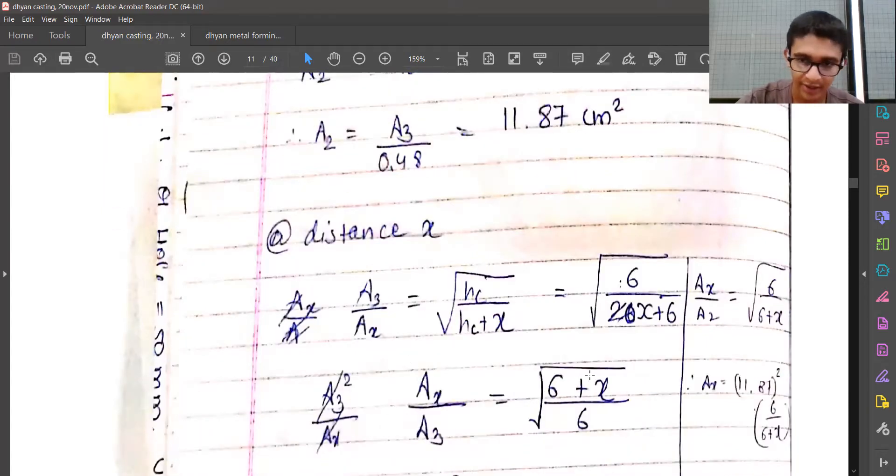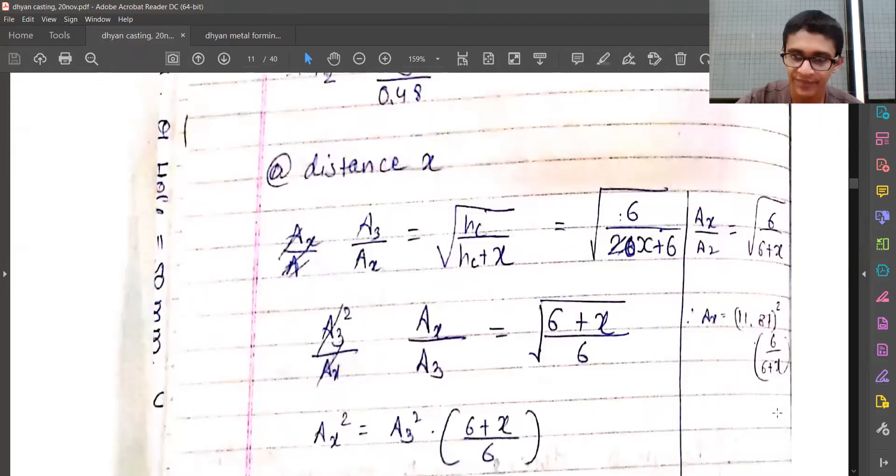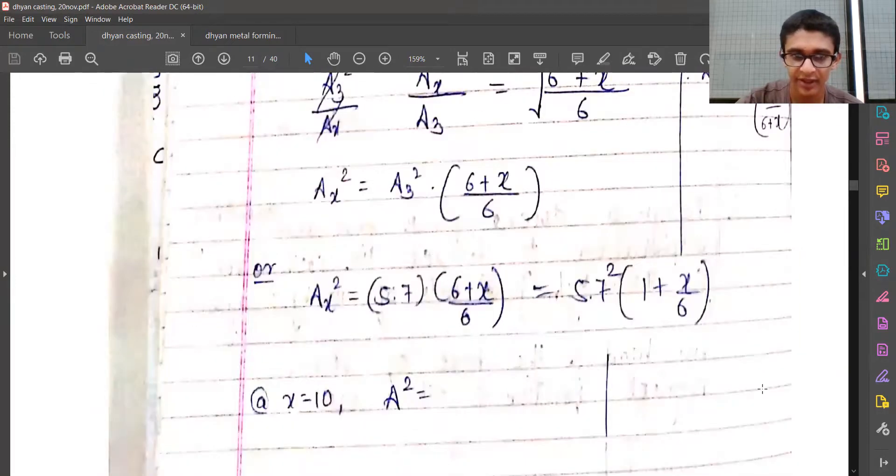So ax by a2 will be equal to square root of 6 upon 6 plus x. And similarly we can make a generalized equation to find out the value of area at any location x.